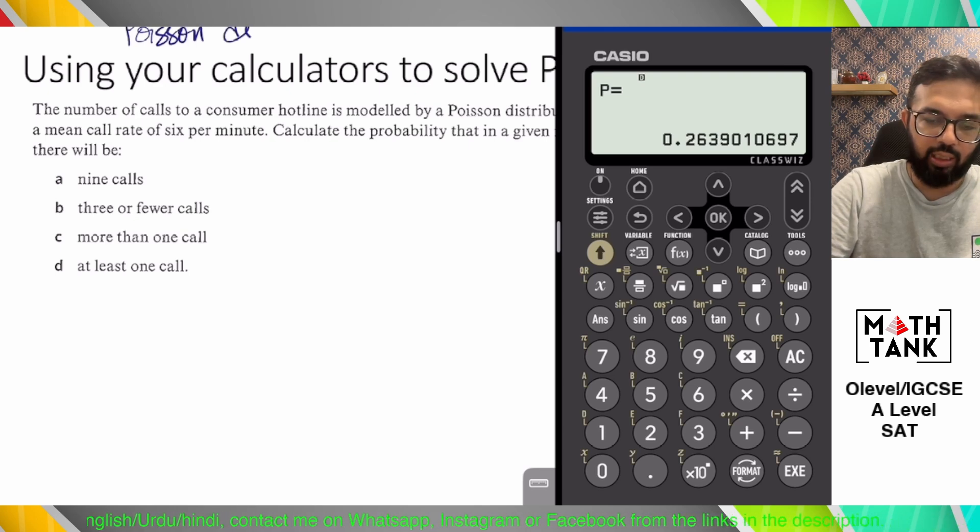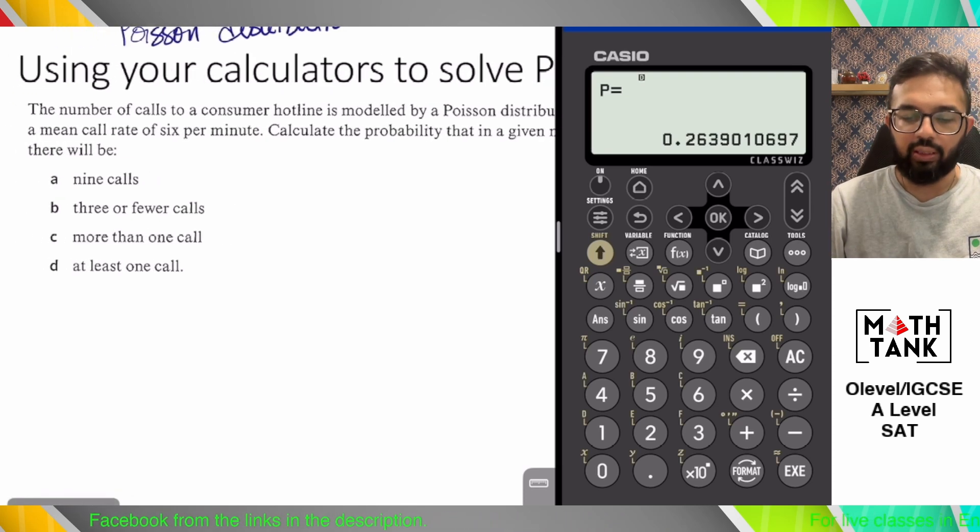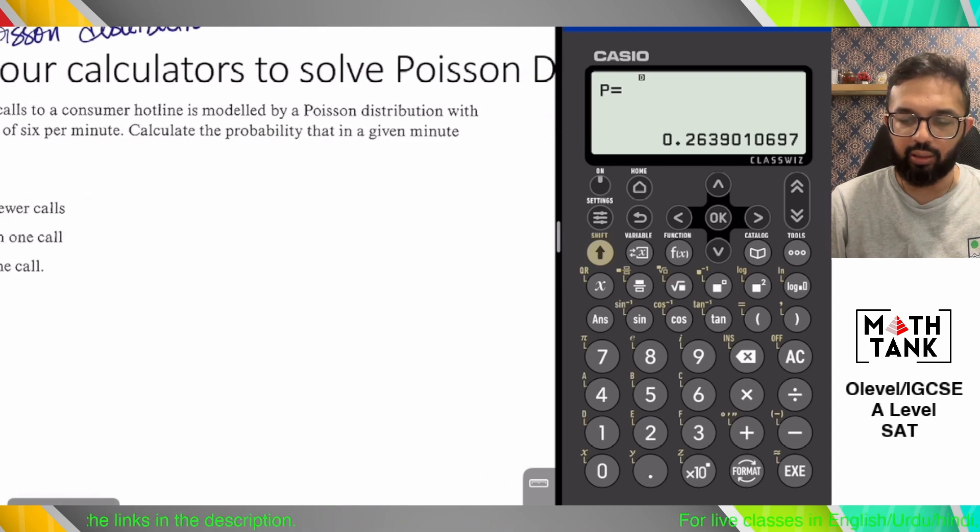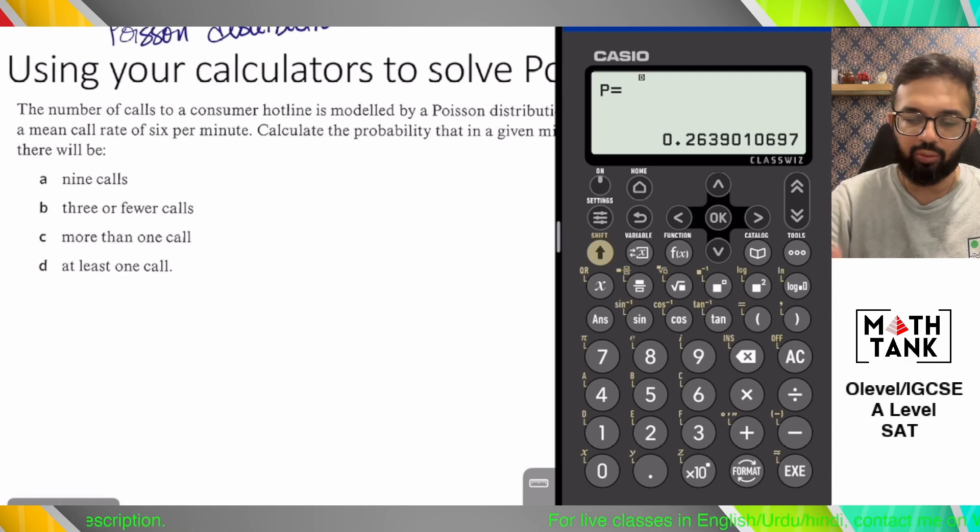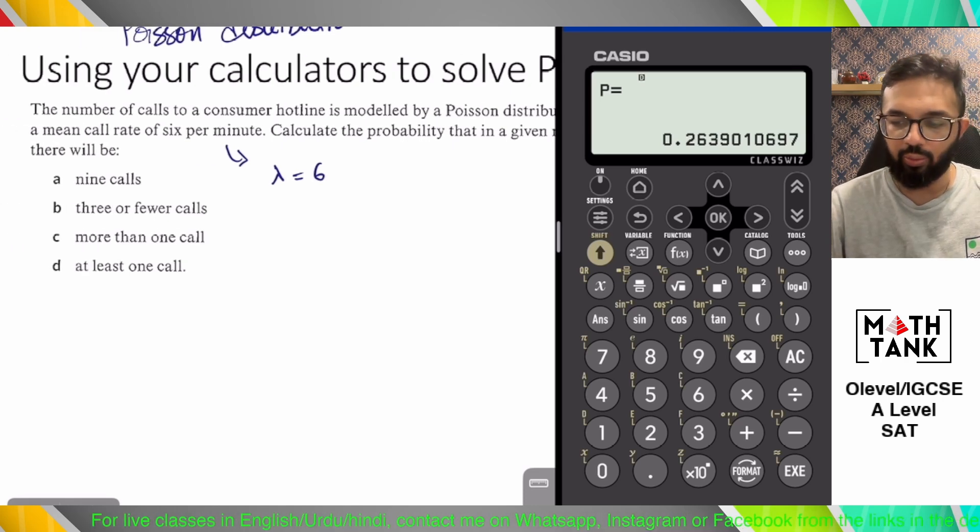With Poisson distributions, as you know, there is an average value called lambda. Let's see what this question says. The number of calls to a consumer hotline is modeled by a Poisson distribution with a mean call rate of 6 per minute. So lambda is 6. Calculate the probability that in a given minute there will be 9 calls.